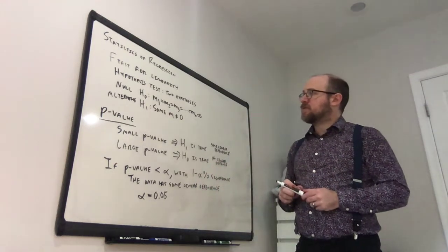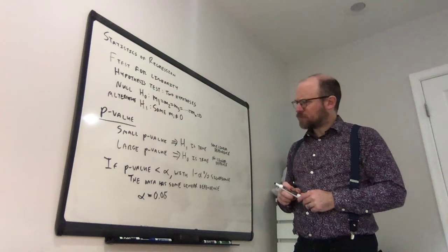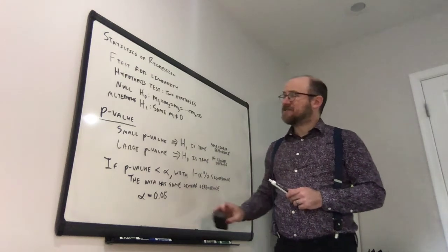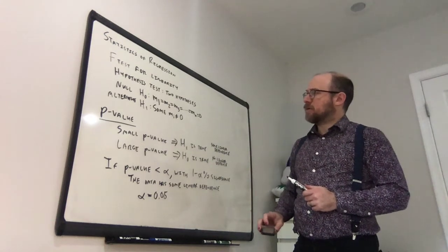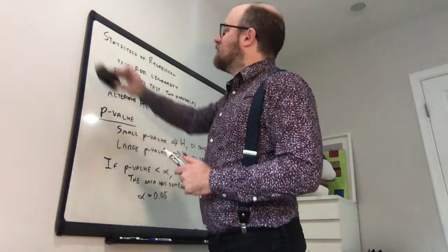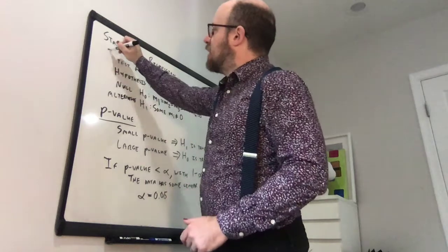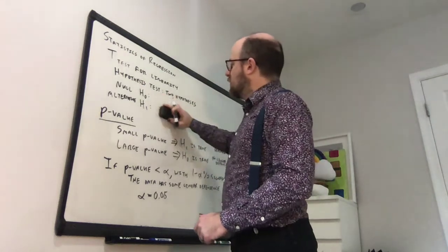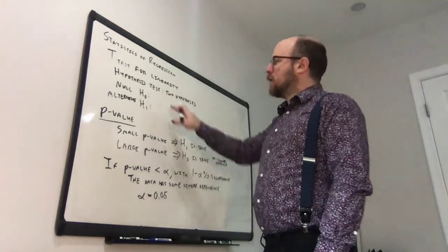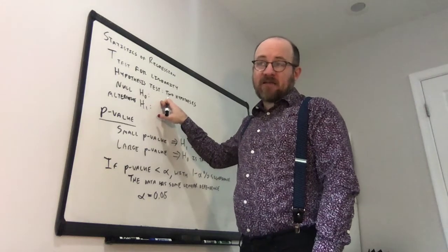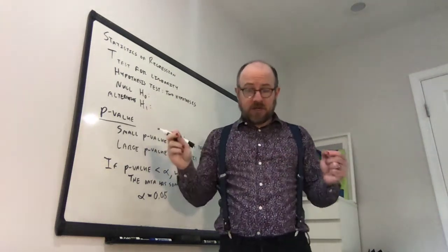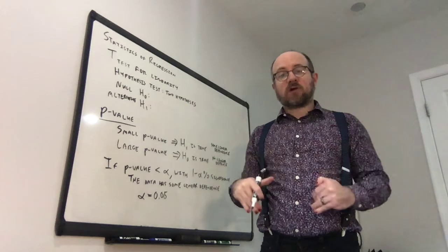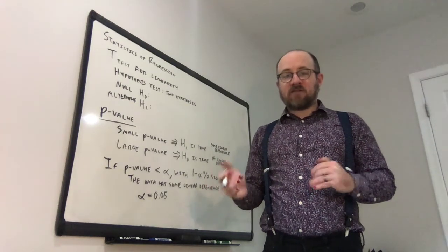That's the first hypothesis test — the F-test. We're also going to look at the t-test for linearity, which is very similar except it doesn't deal with all variables at once. In the t-test we look at each individual variable by itself. For simple regression these two tests give the same results; it's only in multiple regression, where you have many slopes, that the t-test zooms in on a particular slope.